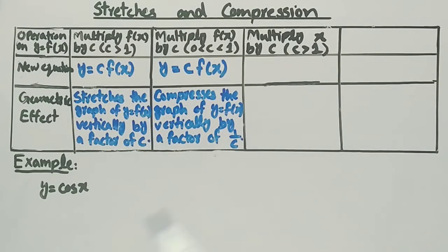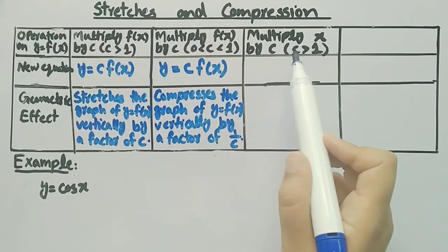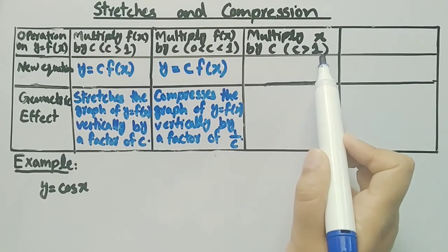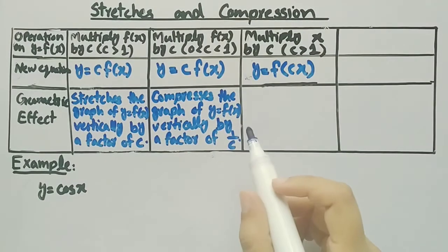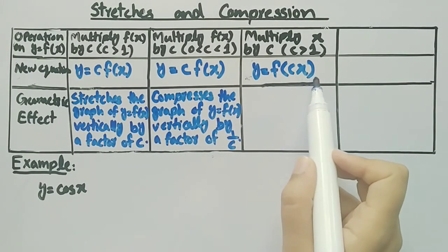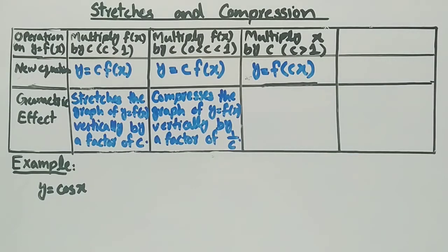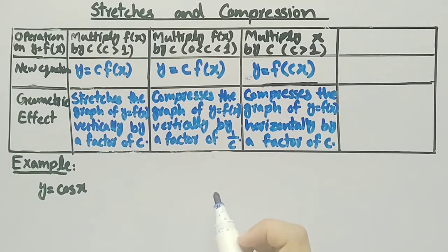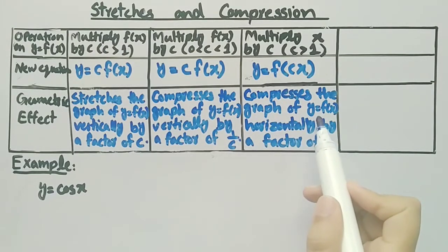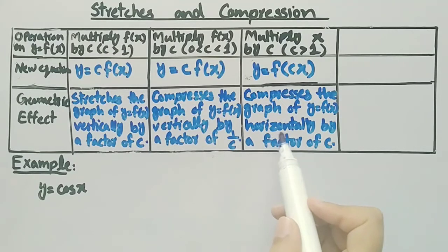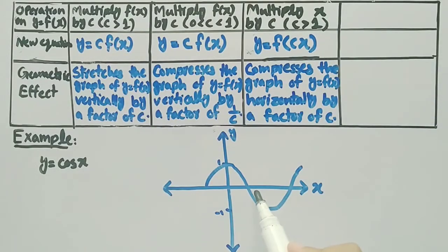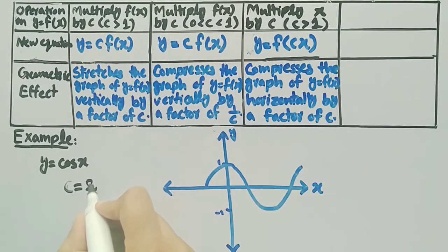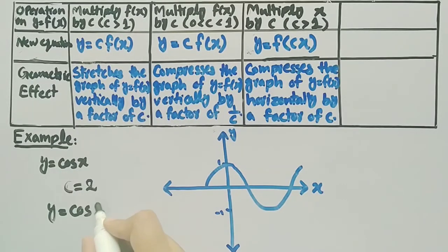The third operation is when we multiply x by c, where c is a constant greater than 1. The new equation will be y = f(cx), and its geometric effect is that it compresses the graph of y = f(x) horizontally by a factor of c. Applying this to our example with c = 2, the new function will be y = cos(2x).